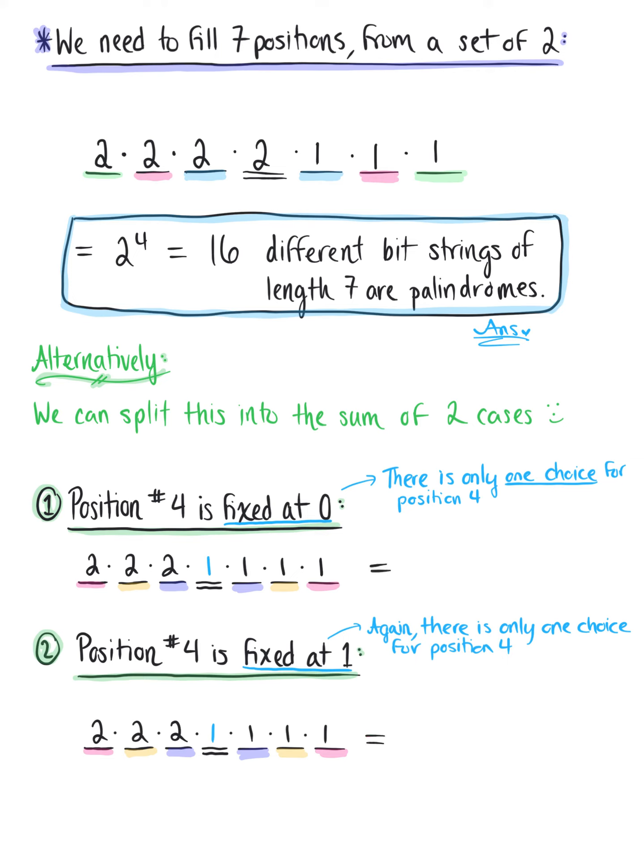So each case is giving us a total of two cubed or eight different possibilities. So we can think about the total number of bit strings of length seven that are palindromes as being equal to eight plus eight or sixteen.